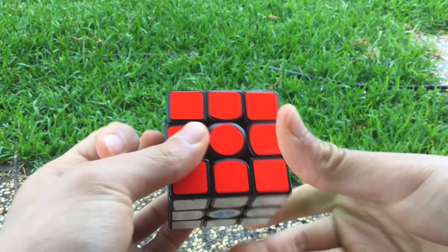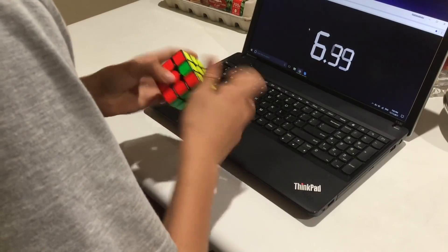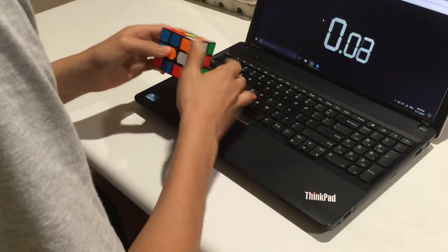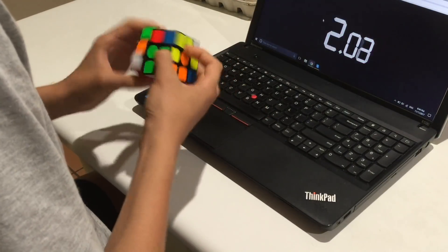Just some quick notes about my speed. My PB average of 50 is 9.49 but my global average is about 9.8 to 9.9. All my other PBs are in the link in the description.